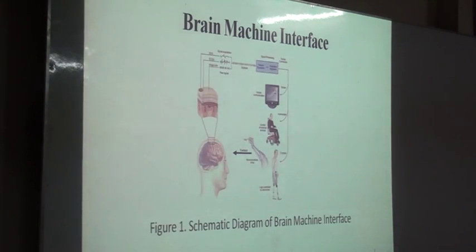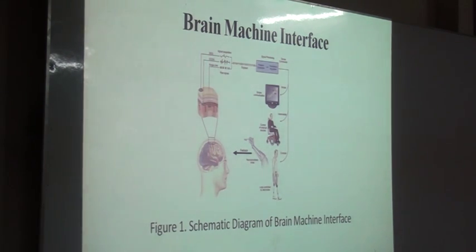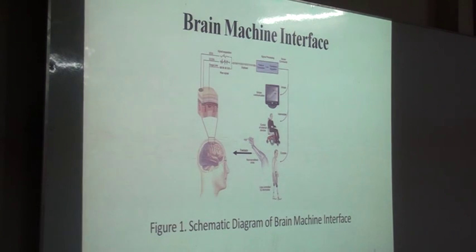Here is a schematic to understand how brain-machine interface works. Our first step is to extract signals from the brain. The signals need to be digitized and then analyzed to extract exact features. Those features or signal factors will be used to control a computer, a wheelchair, or a prosthetic limb, or something like that.